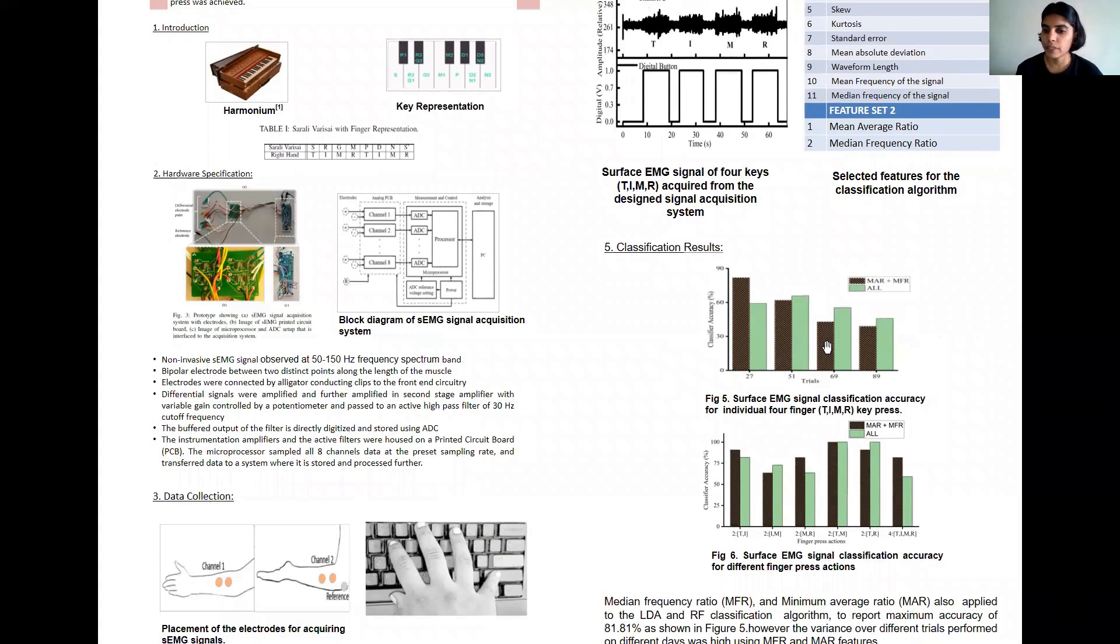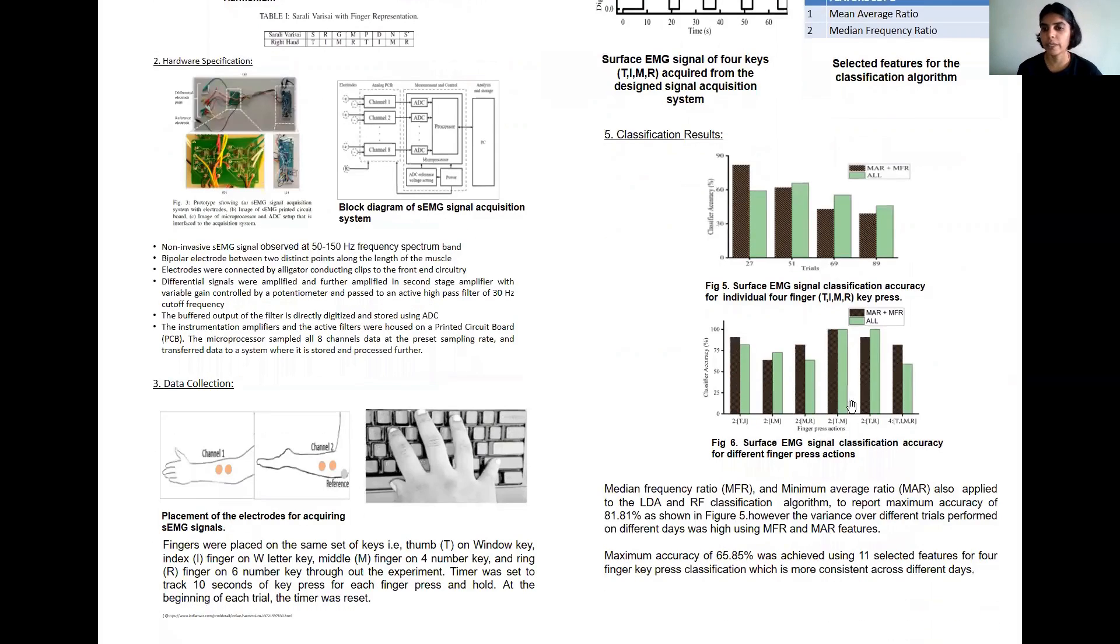Feature set one gave an accuracy of 65.85% whereas feature set two gave an accuracy of 81% for four finger classification. In case of two finger classification we saw almost an accuracy of 90%, above 90% for all of it, and for farthest it was the best.